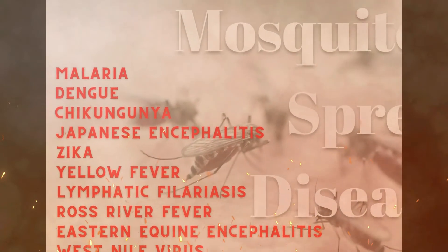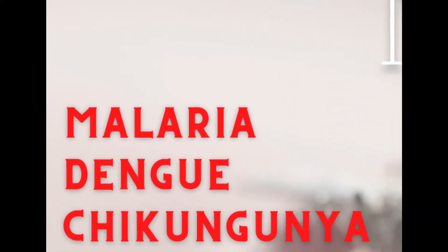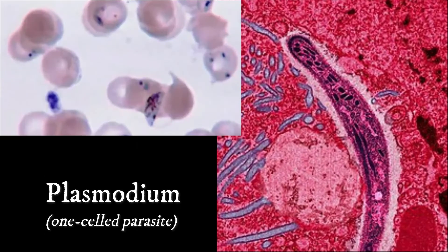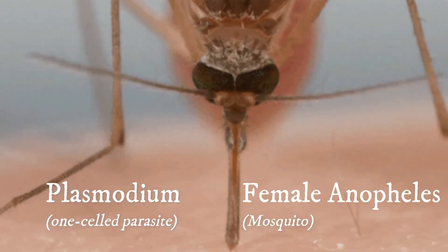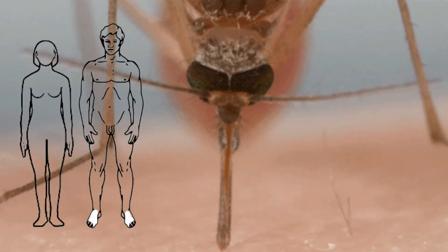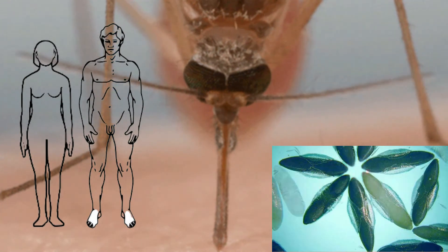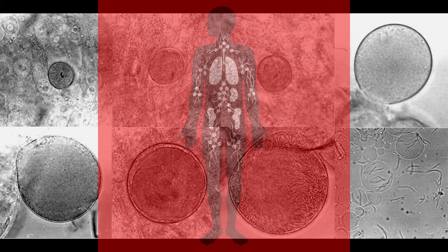One of the most common diseases caused by mosquitoes is malaria. It is caused by a one-celled parasite called Plasmodium. The female Anopheles mosquito picks up the parasite from infected people when they bite to acquire human blood needed to nurture their eggs. Malaria parasites multiply rapidly in the liver and then in red blood cells of the infected person. Malaria is deadly, therefore saving yourself before it hits you is important.